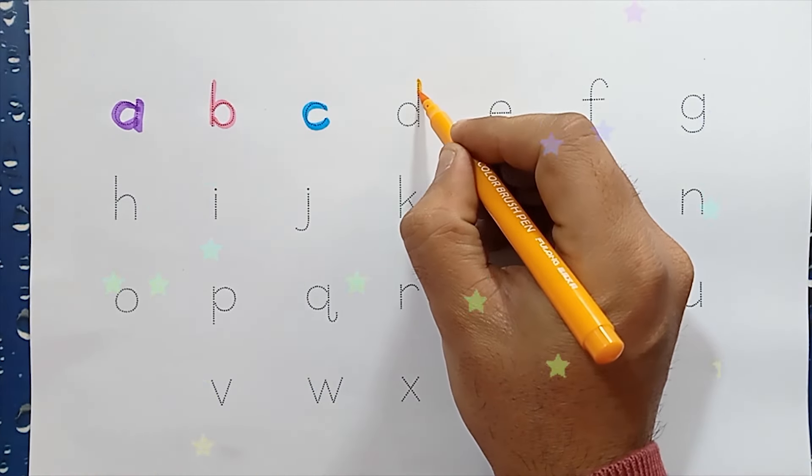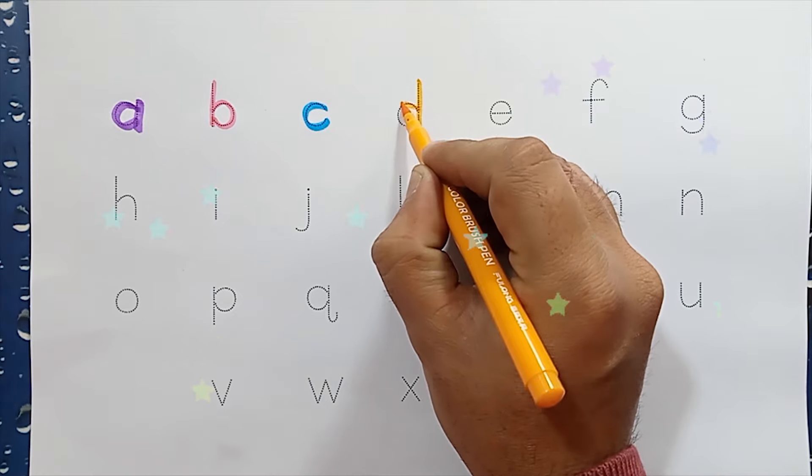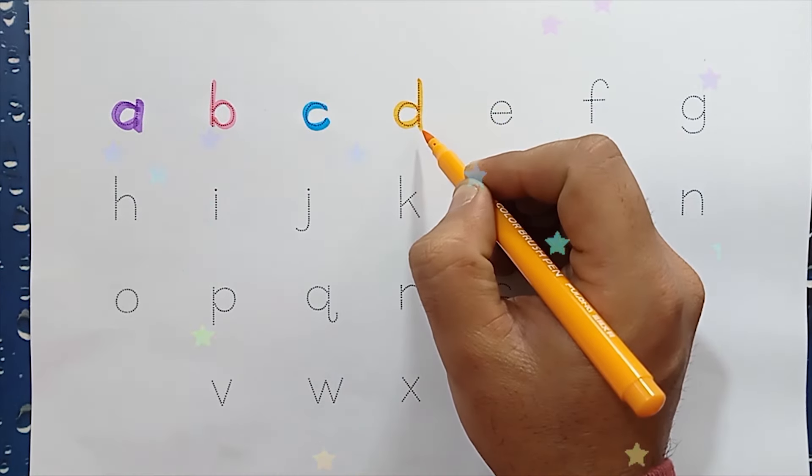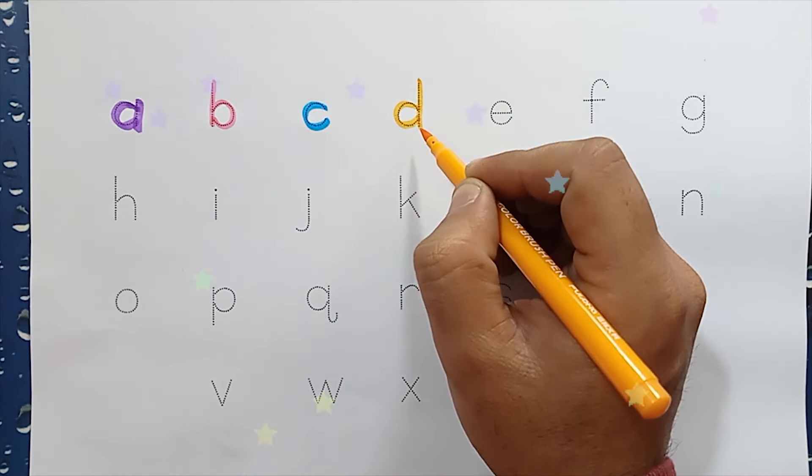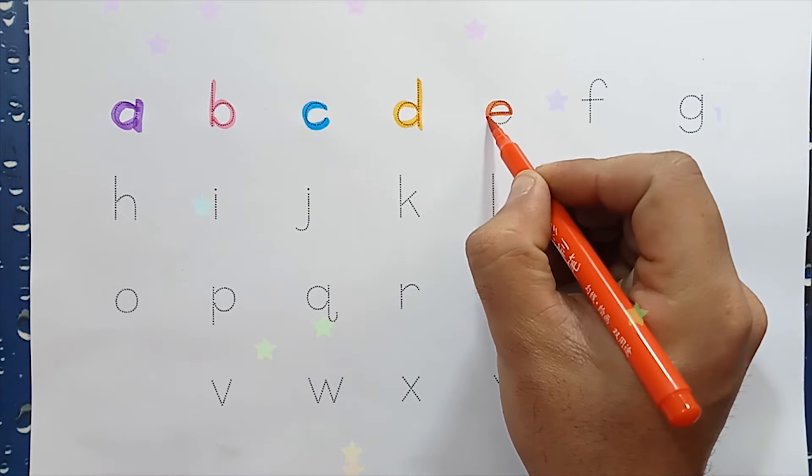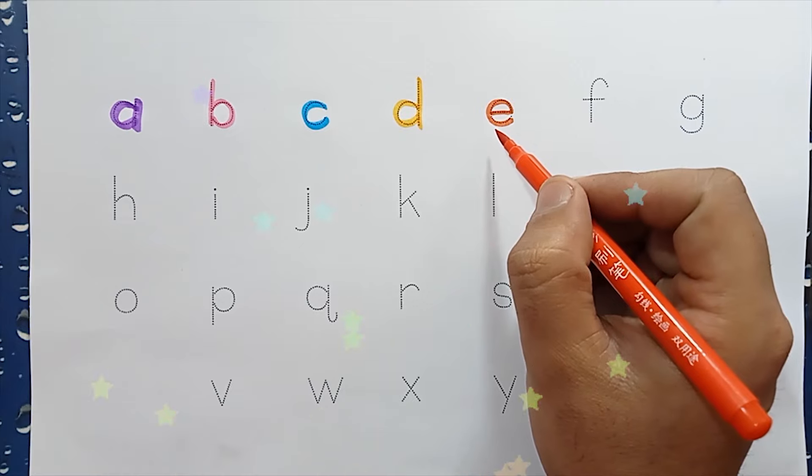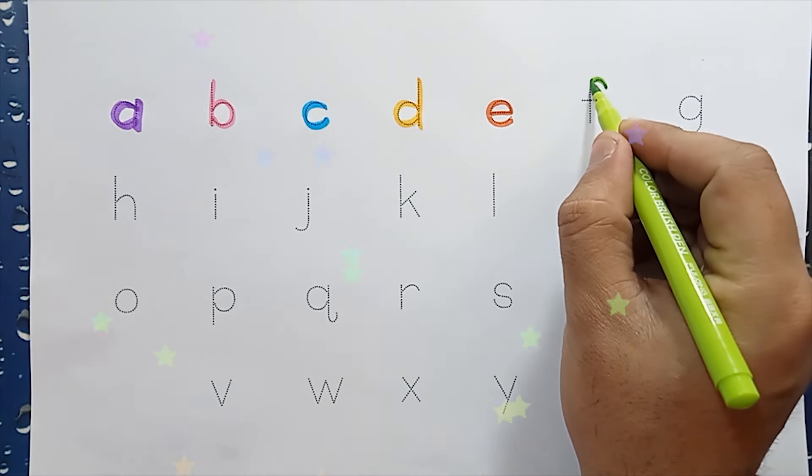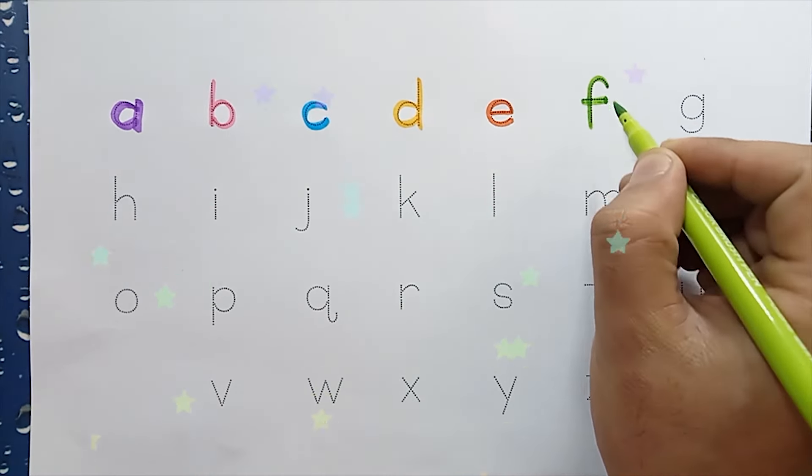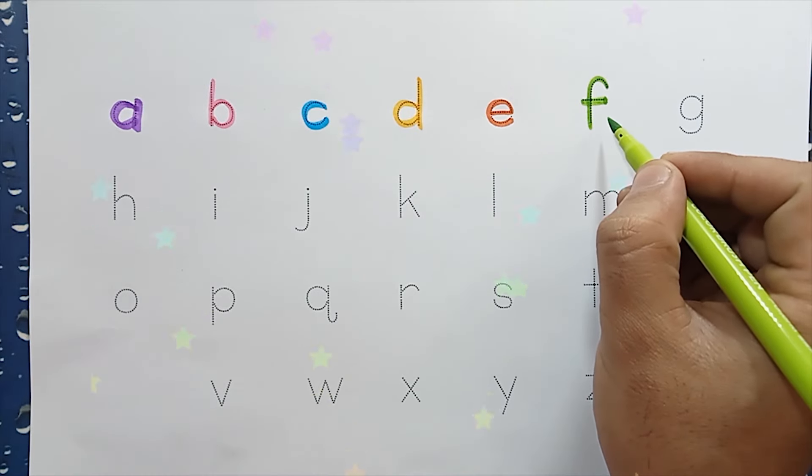D. D is for dragon. E. E is for eggs. F. F is for fries.